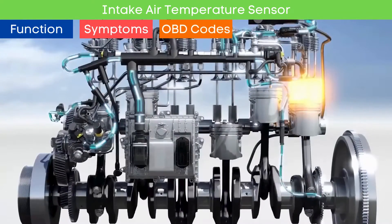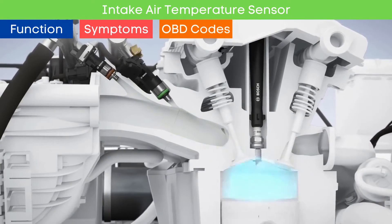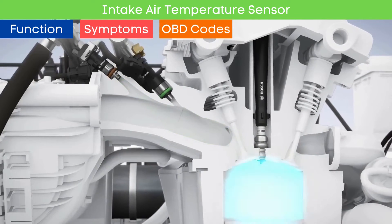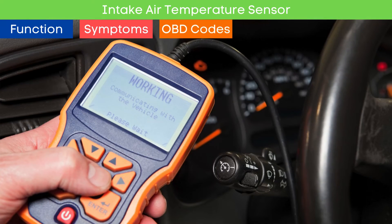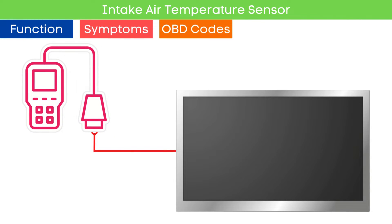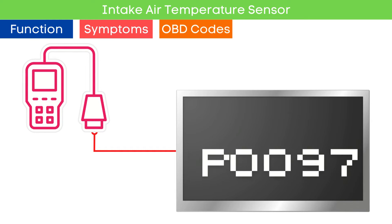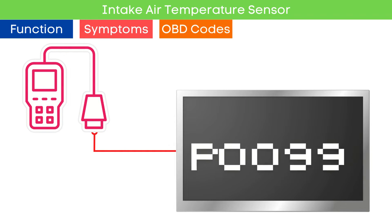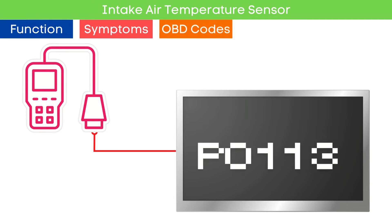These symptoms are common with issues in various components of the engine management system. To ensure that the root cause is the IAT sensor, it is necessary to read OBD-II codes and check for specific codes related to a faulty IAT sensor. The codes associated with a bad IAT sensor are: P1095, P1096, P1097, P1098, P1099, P1110, P1111, P1112, P1113, P1114.